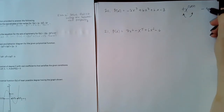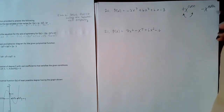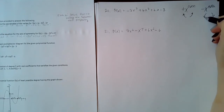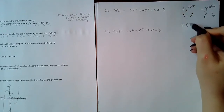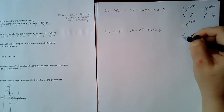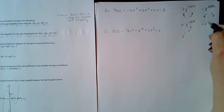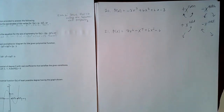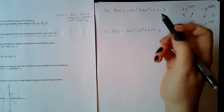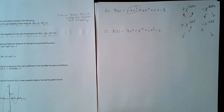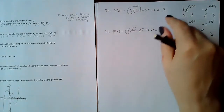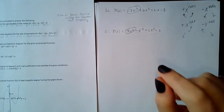If you have a positive coefficient with an odd exponent, it goes down on the left and up on the right. A negative coefficient with an odd exponent does the opposite — up on the left and down on the right. You always look at the term with the highest exponent. Sometimes they're not in order, so make sure you're hunting for that term. For number 20 and number 21 respectively, I identify the leading terms and apply these rules.